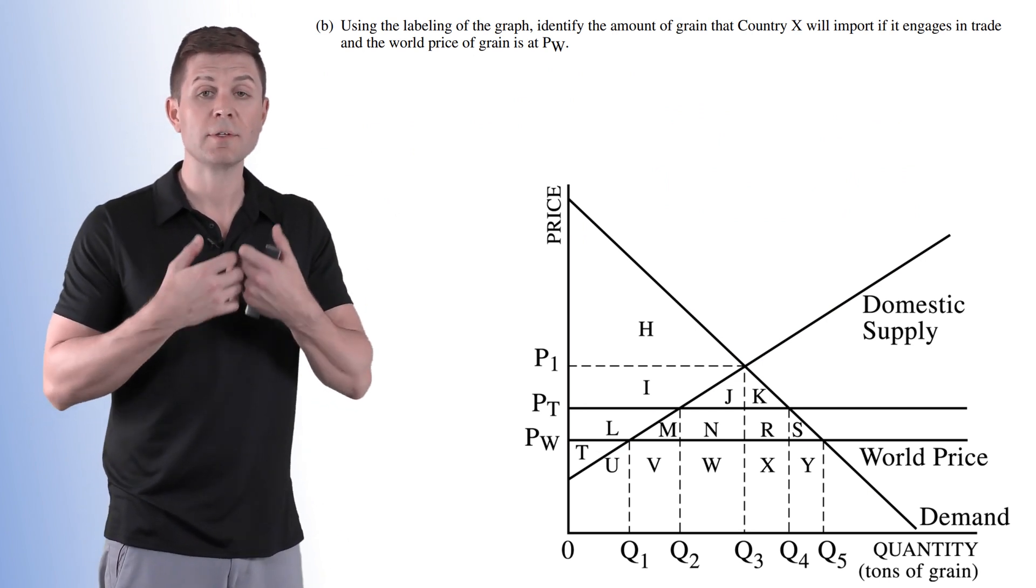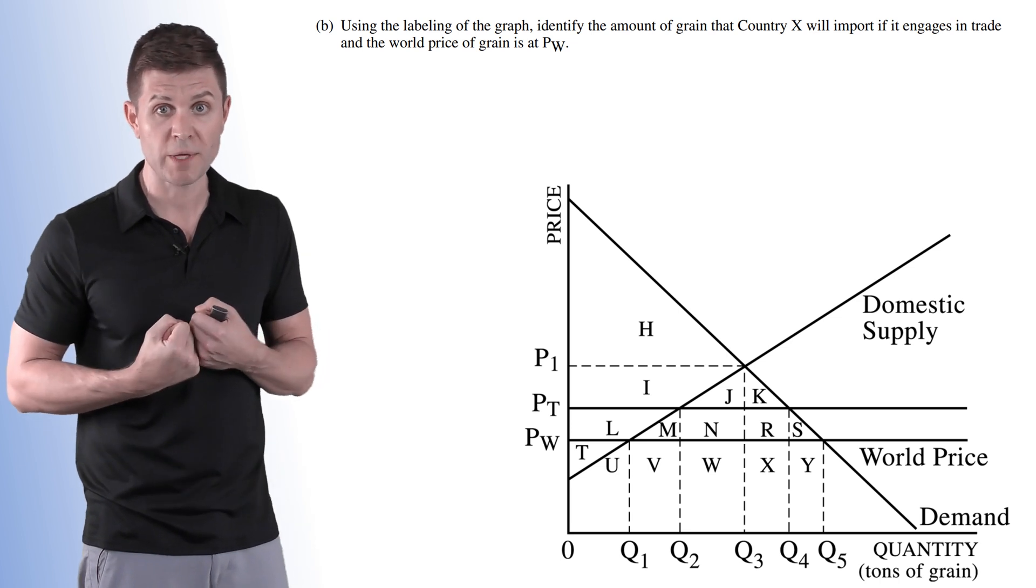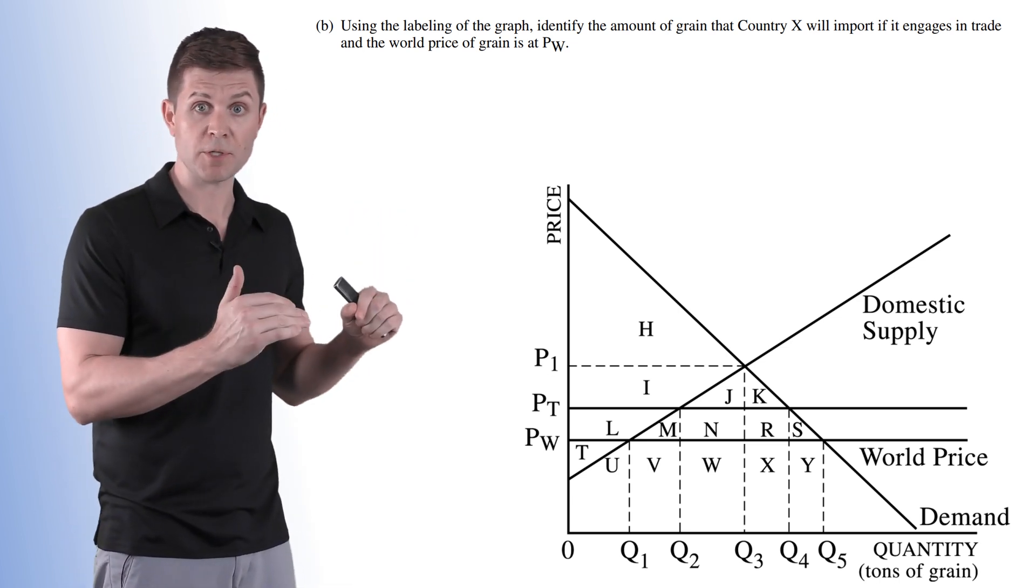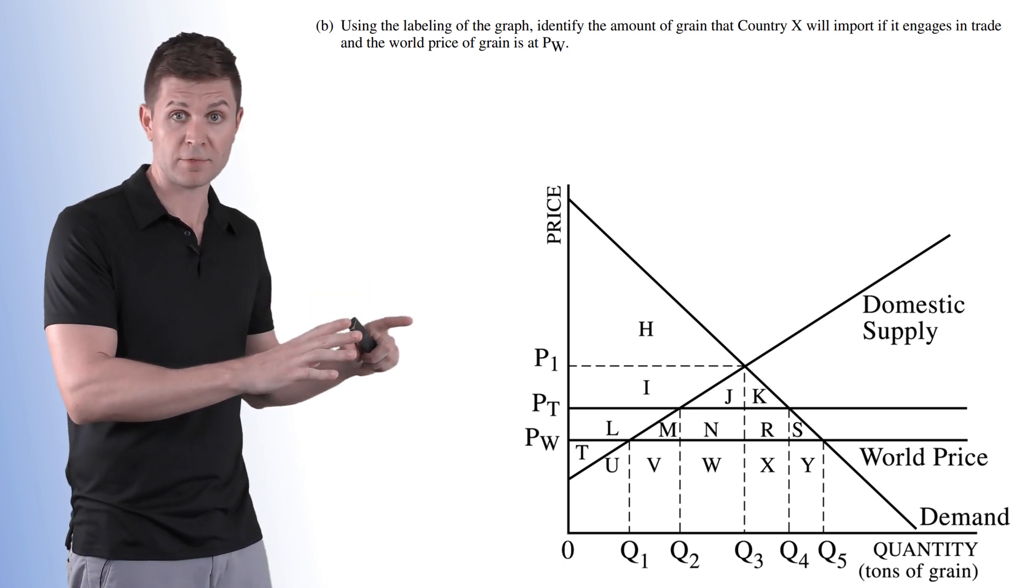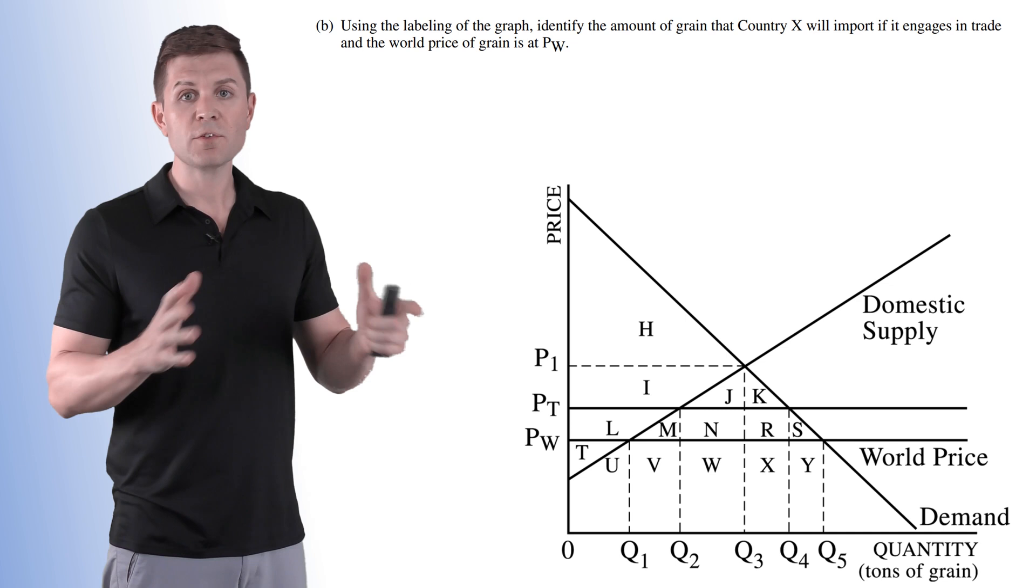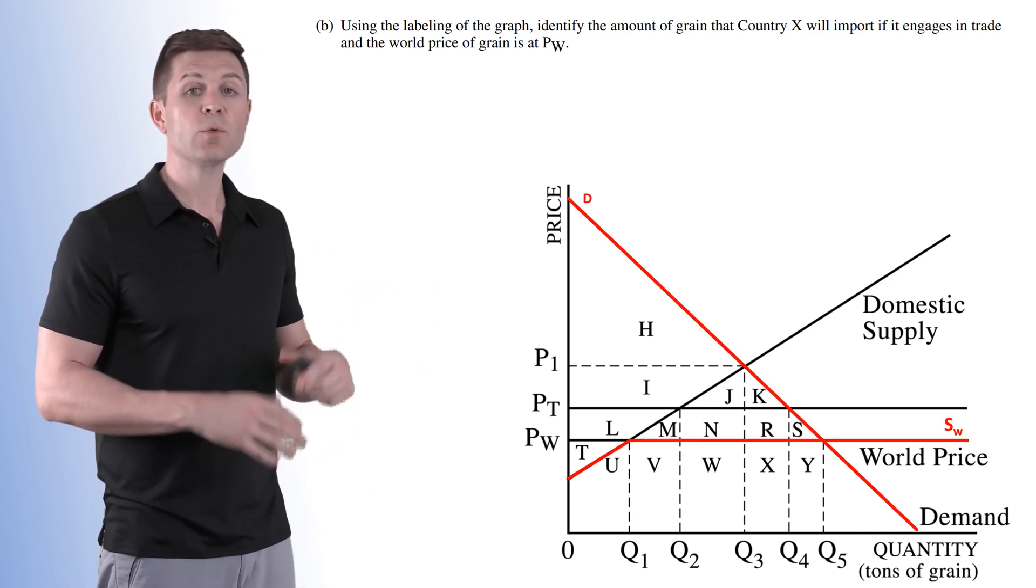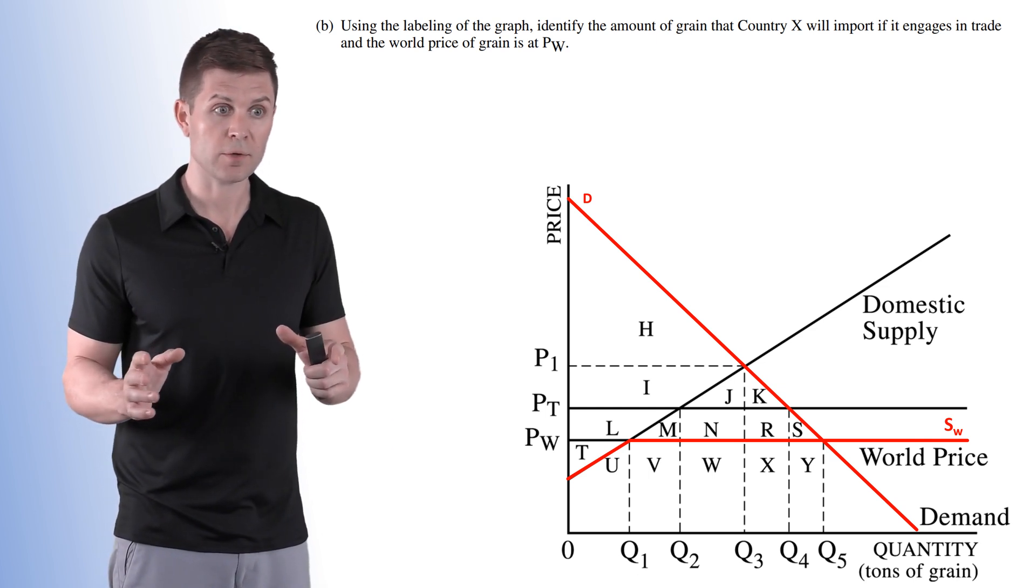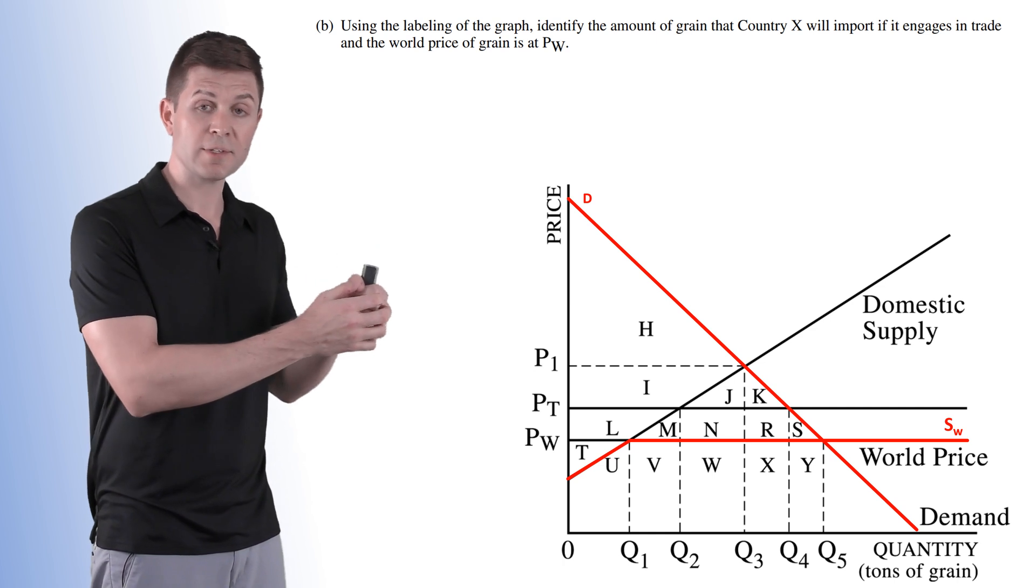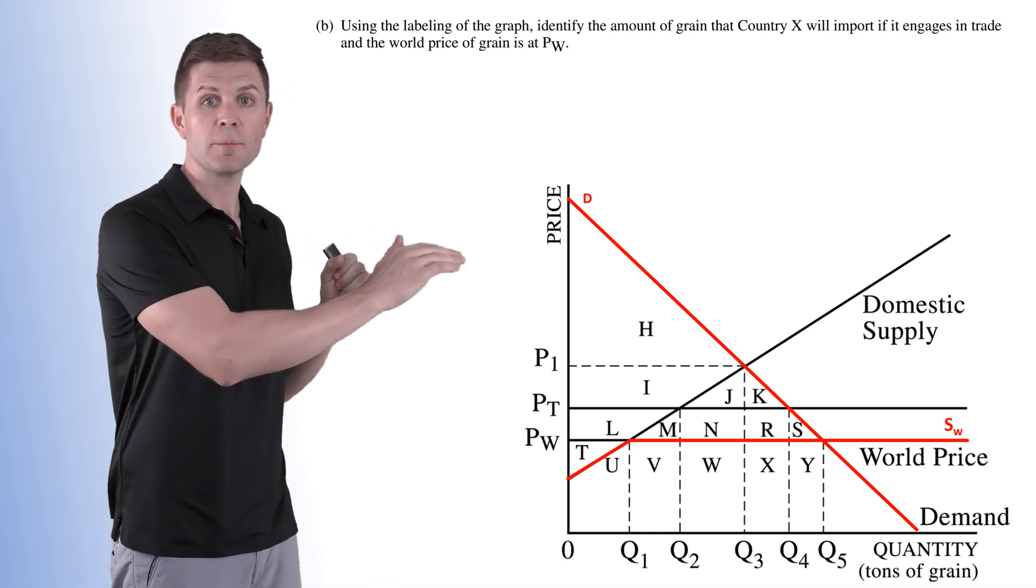Part B has us looking at implementing trade and then identifying the amount of grain that we import into the country. We have a price at PW below equilibrium or domestic equilibrium. So we're definitely going to be importing the good. So we got to figure out where our equilibrium is. We got our demand curve.